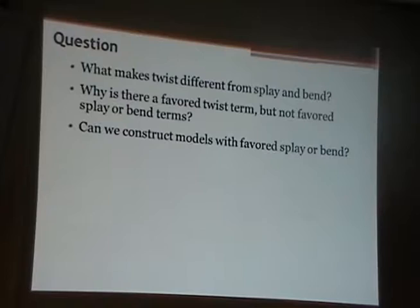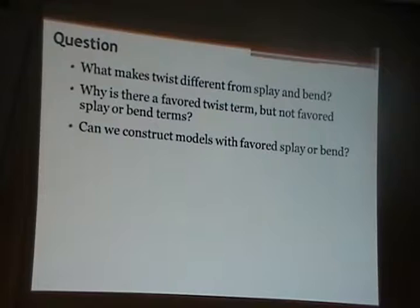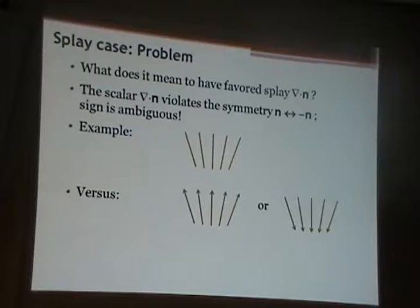Splay and bend are jealous — they say, why does twist get a favored value and we don't? What makes the difference between twist versus splay and bend, that there can be a favored twist only? Can we construct a model that has a favored splay or bend? Let's see what it would take to do something like that.